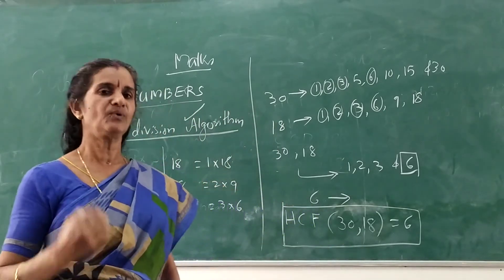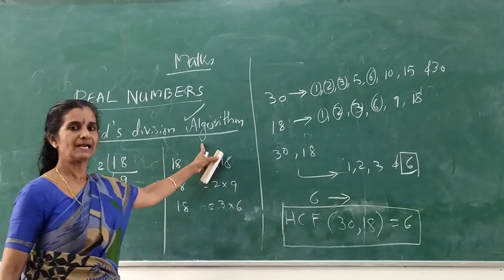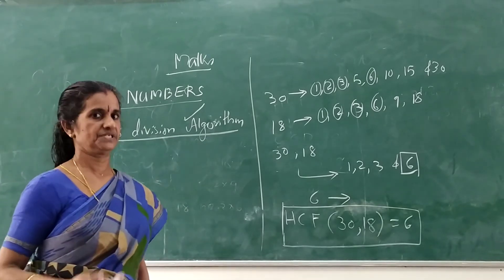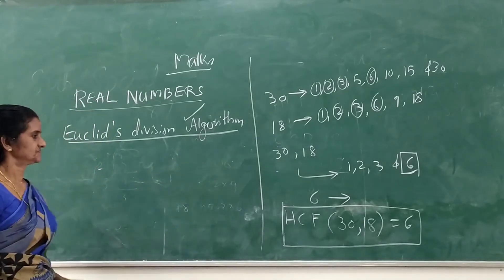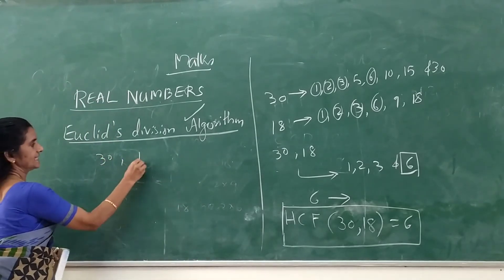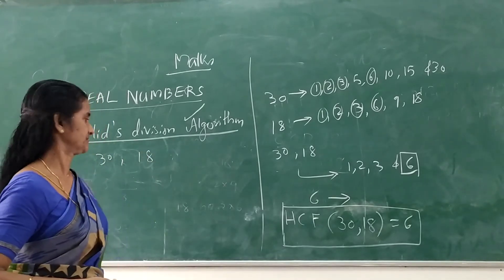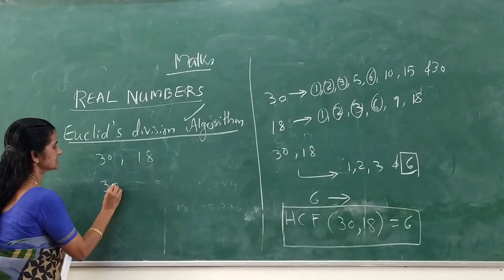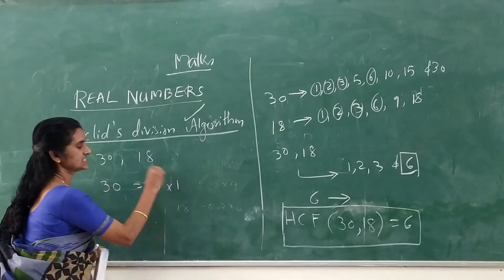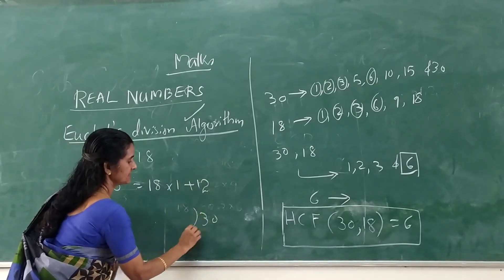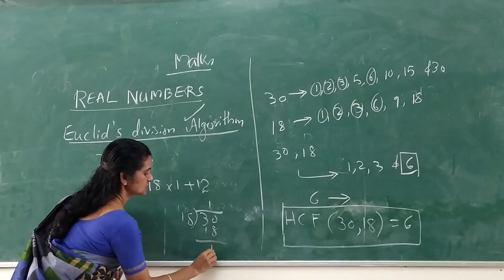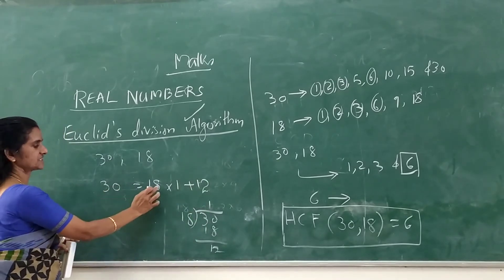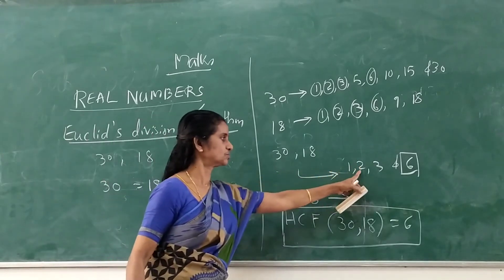Now let us see what Euclid's Division Algorithm is. We have already learnt Euclid's Division Lemma. For the numbers 30 and 18, by Euclid's Division Lemma, we can express 30 as 30 = 18×1 + 12. We know the common factors of 30 and 18 are 1, 2, 3, and 6.